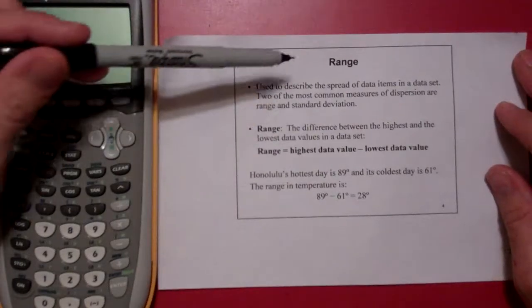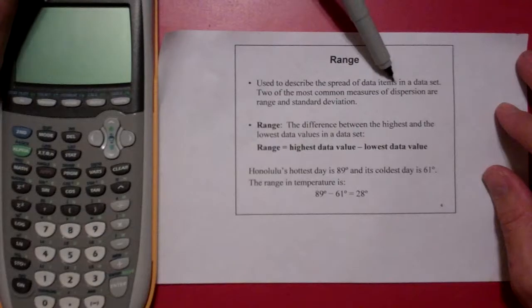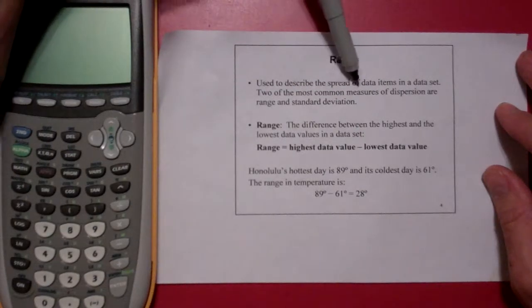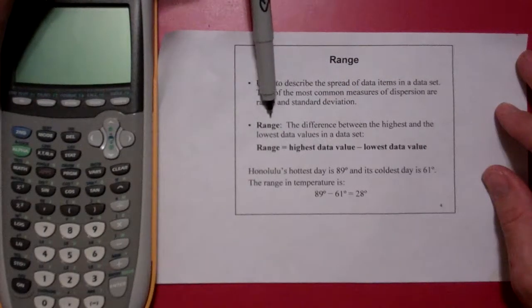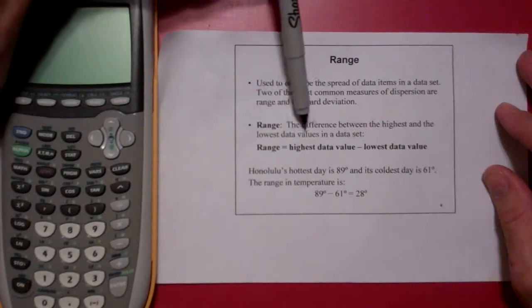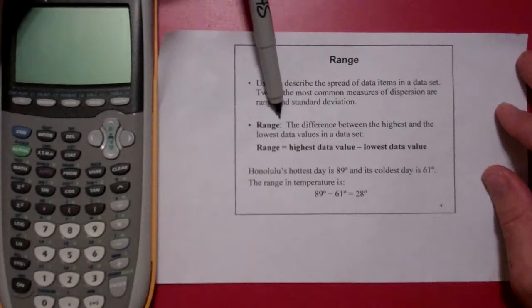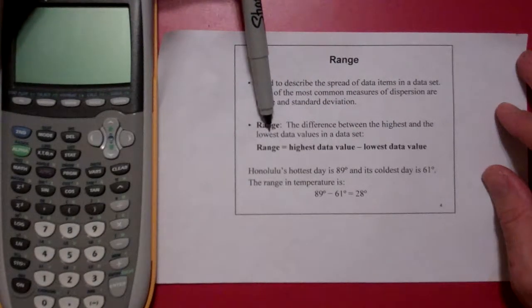So what is the range of values? Range is used to describe the spread of data items in a data set. Two of the most common measures of dispersion are range and standard deviation. Range is the difference between the highest and the lowest data values in a data set. This is why the range is very sensitive to outliers, because an outlier is usually either the highest or the lowest data point.